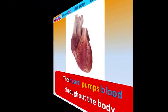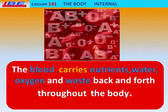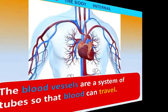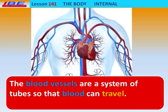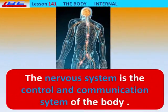The cardiovascular system transports nutrients throughout the body. The heart pumps blood throughout the body. The blood carries nutrients, water, oxygen, and waste back and forth throughout the body. The blood vessels are a system of tubes so that blood can travel.